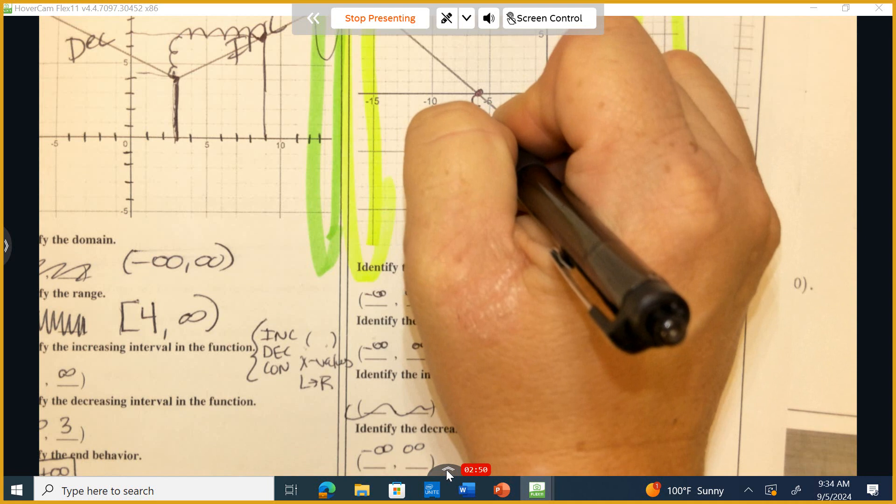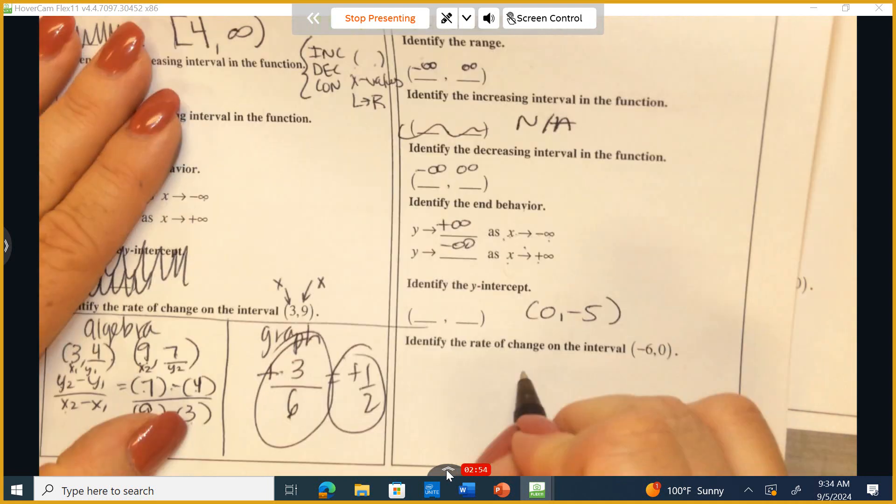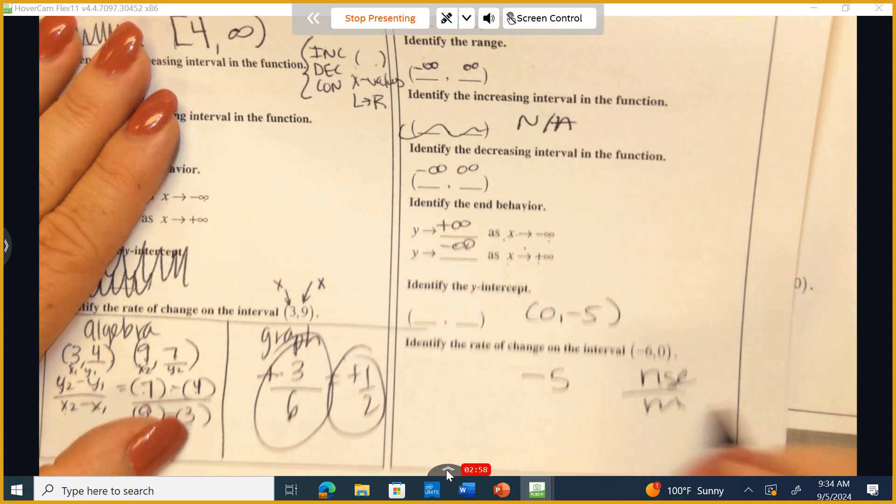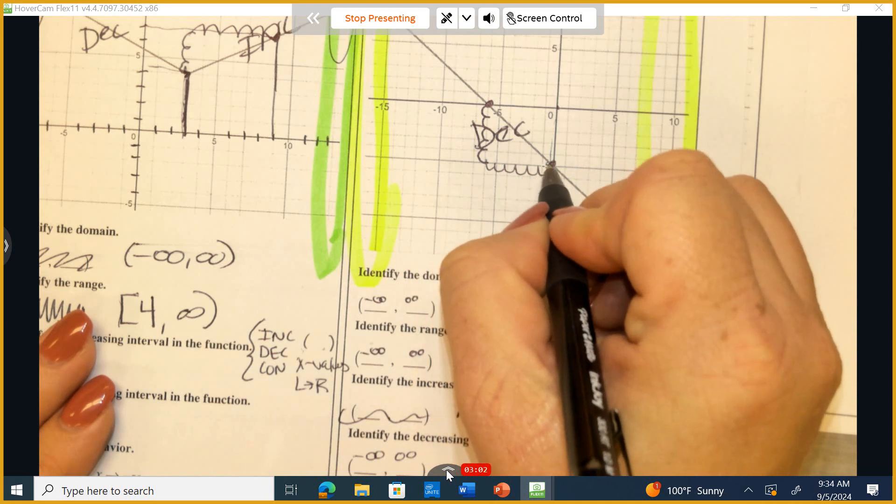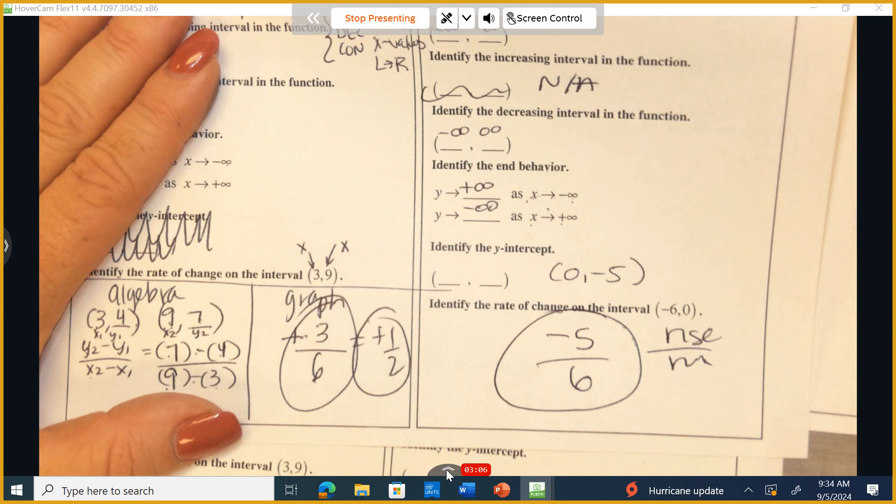1, 2, 3, 4, 5. Now I'm at the same level. Down 5. So rise over run. Rise over run. Okay. Now I need to go to the right. 1, 2, 3, 4, 5, 6. 6 to the right. And there is your rate of change.